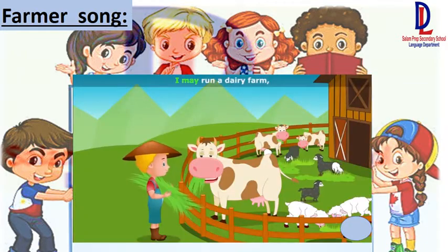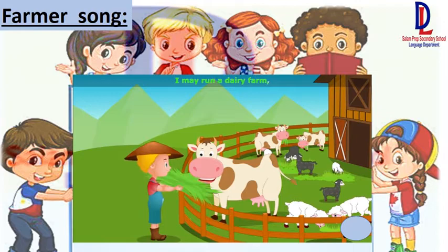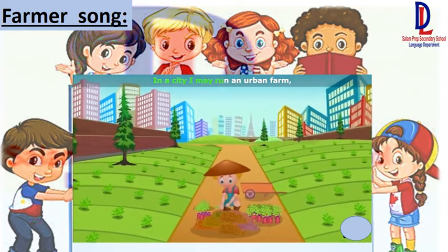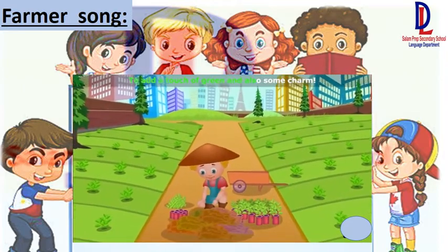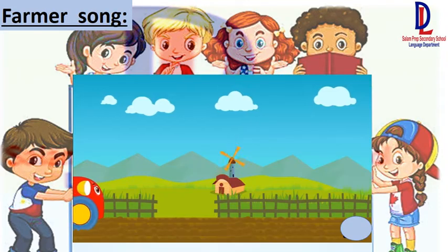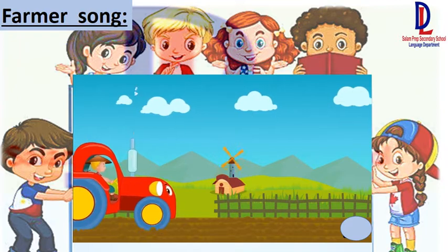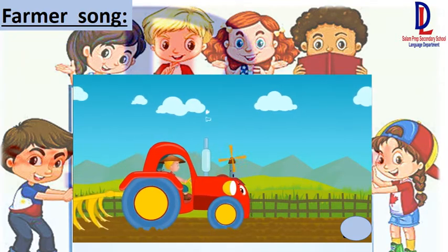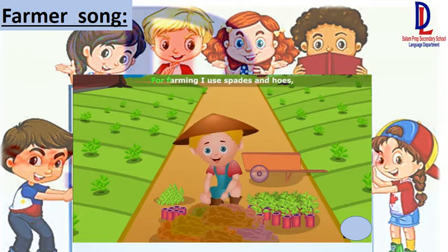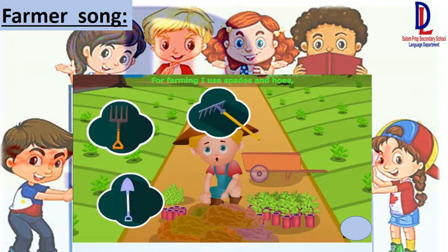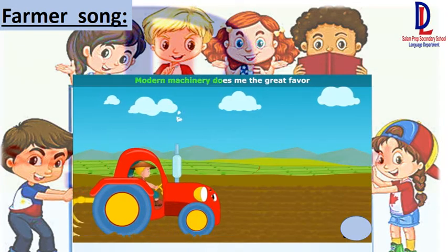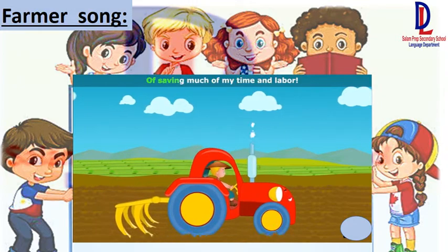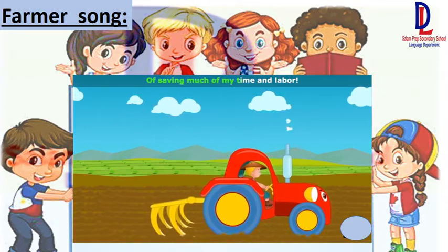I may run a dairy farm where cattle are milked and kept from harm. In a city I may run an urban farm to add a touch of green and also some charm. For farming I use spades and hoes, plows and sickles, spikes and harrows. Modern machinery does me the great favor of saving much of my time and labor.